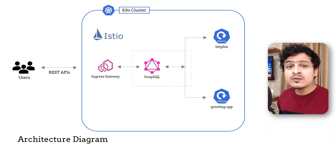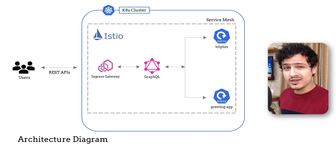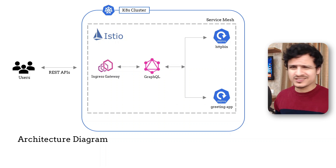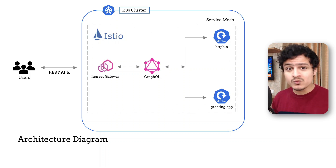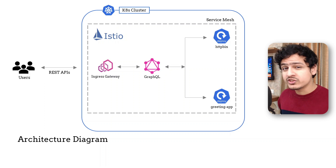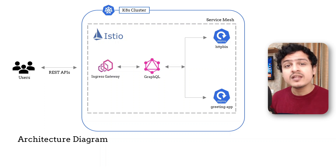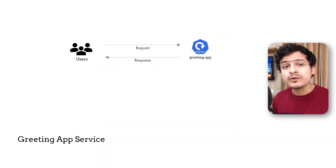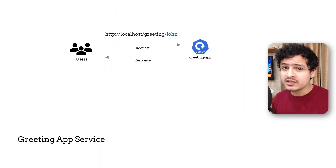Before we start, let's have a quick look at the services we intend to deploy in our mesh. This is what it looks like. I know what your first thought is — what's GraphQL doing here? Don't worry, we don't really need GraphQL, but it's really cool and I just couldn't resist the urge. On a more serious note, you can see that we have three services. The first one is the Greeter app. It exposes a single API to greet the name passed in its URL.